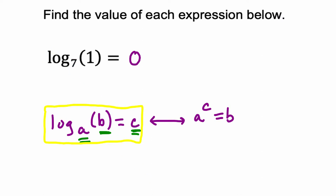So in this case right here, a is 7, right, b is 1, and c is 0.